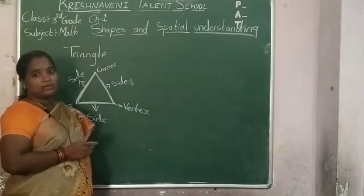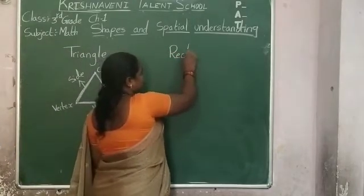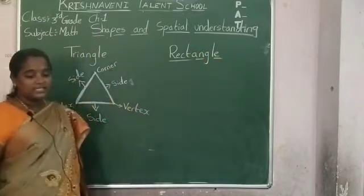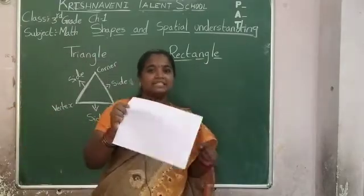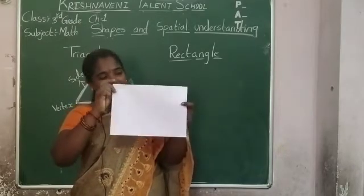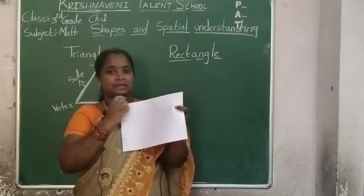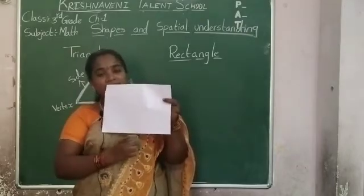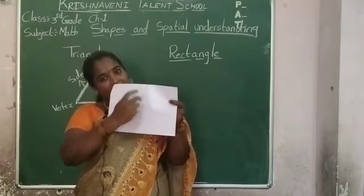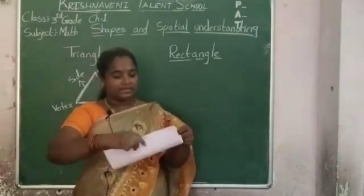Next, what is the another shape? Rectangle. So which is called a rectangle? This is the example of a rectangle. A rectangle is a closed figure made up of 4 line segments, and the opposite sides of a rectangle are equal — they have equal length. See here, this length and this length are the same.